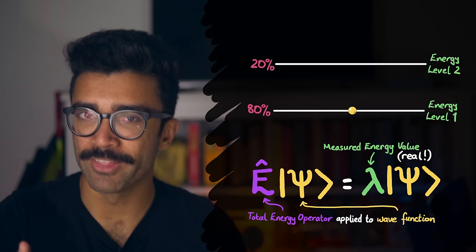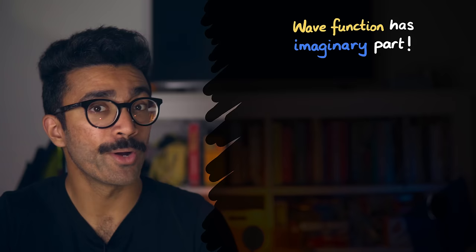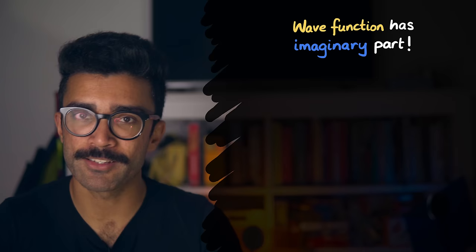So then the question that comes up is, how does an imaginary operator give us a real quantity, which is the energy of the system? Well, the answer to this is that the wave function itself also has some imaginary part. It's a very hand wavy explanation, but that's kind of basically what happens.